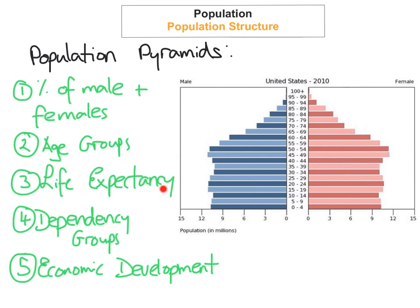Population pyramids also tell us the life expectancy. They tell us the dependency groups, which I talked about in my first population video. This is a common question in the junior certificate examination — working out the dependency groups. Dependency groups is the number of people that are active compared to the number that are inactive and how they are supported. The inactive group is people not working: those aged zero to 15 and those aged 65 and over. Add those percentages together and that gives you your dependency group percentage.